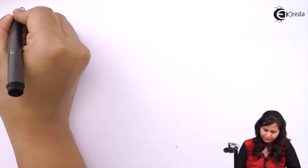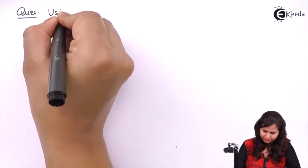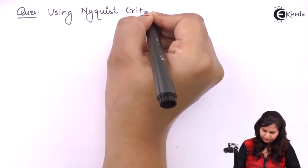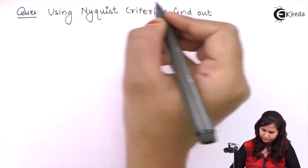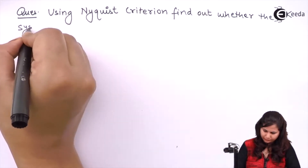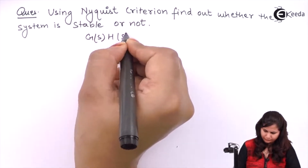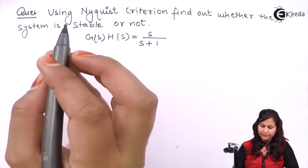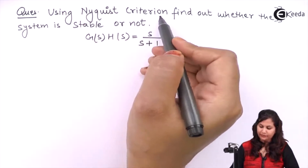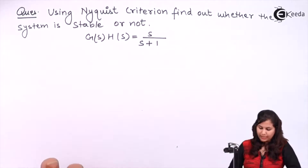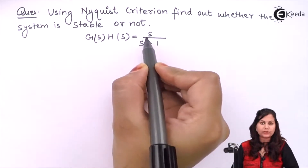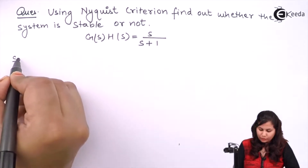Hello friends, in this video we are going to solve a problem on how to draw the Nyquist plot of a system. So let's take the problem. Our problem is to use the Nyquist criteria to find out whether the system is stable or not, and the transfer function is given as G(s)H(s) equals s upon s plus 1.